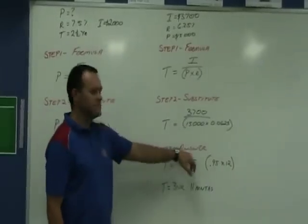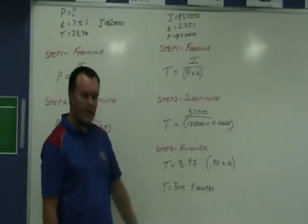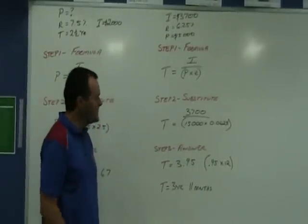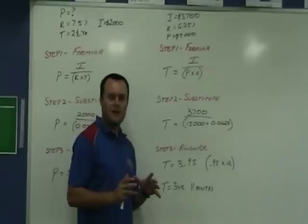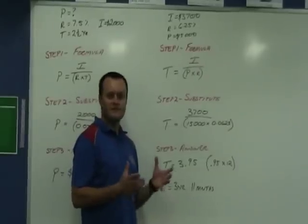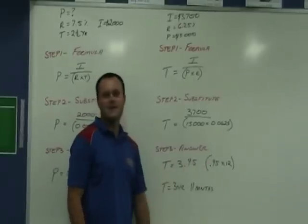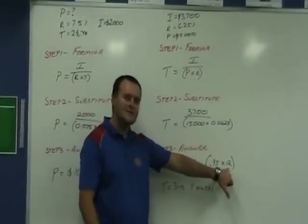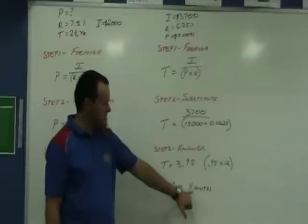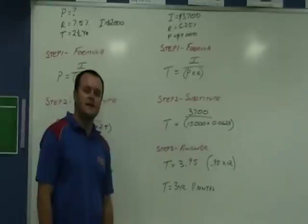Step 3, we get an answer of 3.95 rounded. 0.95, we don't want to use that. We want to be a little bit more mathematical. So, what is 0.95 as a fraction of a year? 0.95 times 12 for 12 months in the year gives us 3 years and 11 months. And I've rounded that one down. So, I hope you got both of those right.